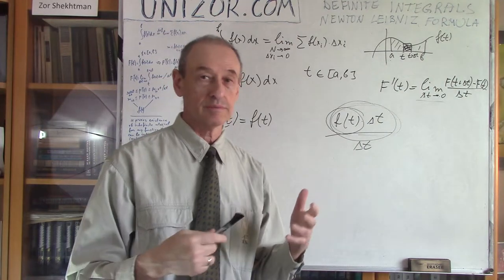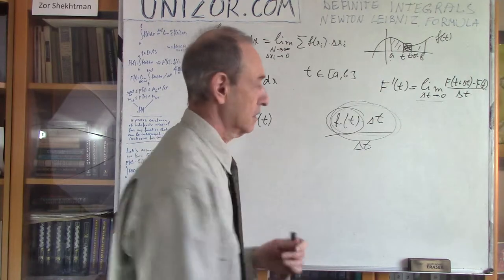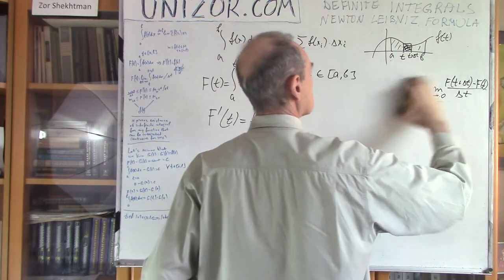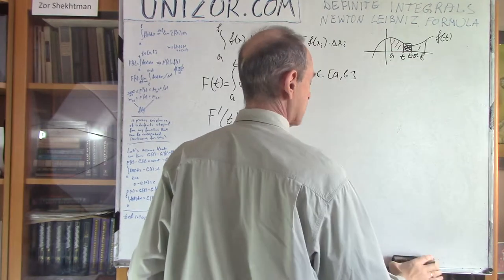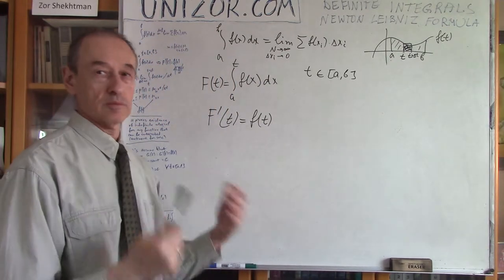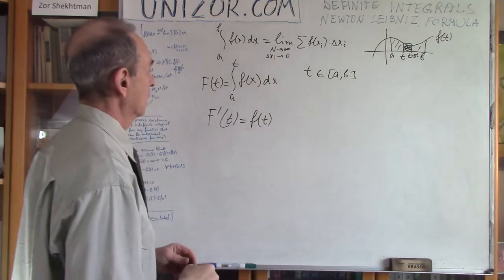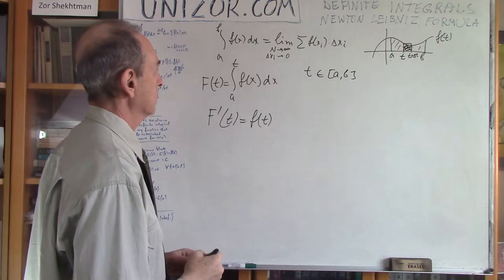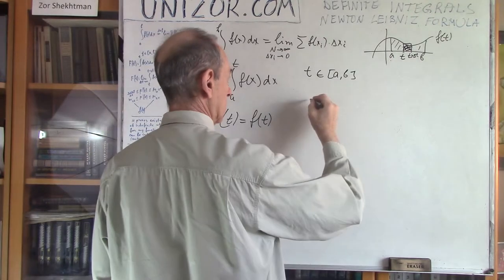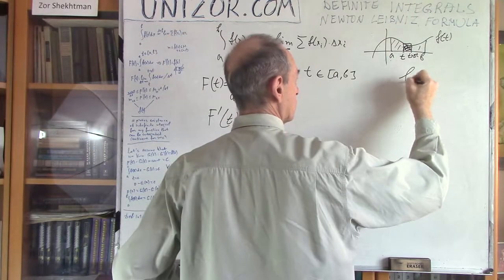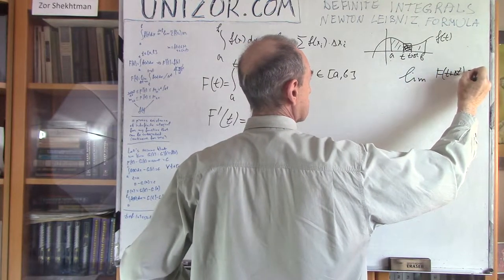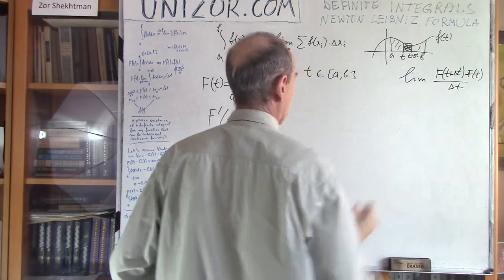Let me prove it more or less formally, without resorting to pictures — especially considering they're not artistically nice anyway. How can we prove this more formally? Let's consider it this way. I will use the limit [F(t+Δt) − F(t)] / Δt.